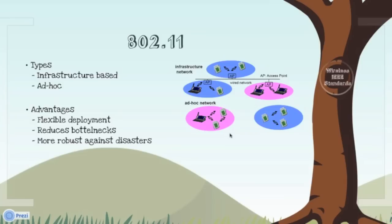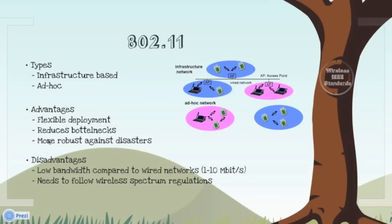Advantages of 802.11n: It is flexible, as it supports small as well as large networks. It reduces bottlenecks — bottlenecks being jamming due to multiple arrival of packets and data. It is more robust against disasters. Disadvantages of 802.11n: Low bandwidth as compared to other existing copper wires and optical fiber. Also, it needs to follow wireless spectrum regulations.